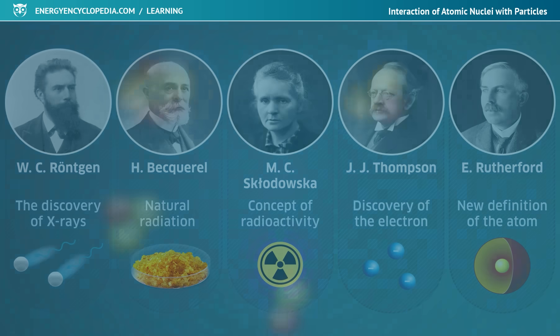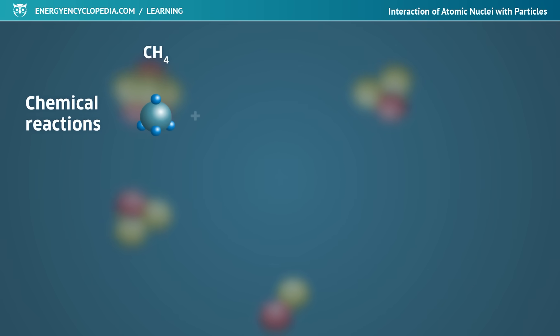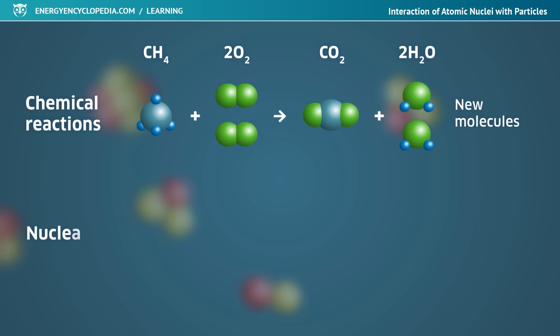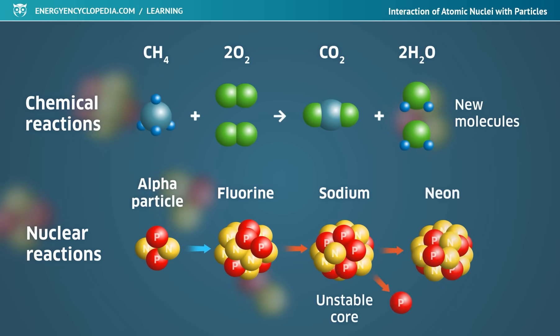While in chemical reactions, atoms interact with each other at the level of their electron shells and new molecules are created by the reactions, in nuclear reactions, the atomic nuclei themselves interact with particles and new nuclei and newly emitted particles are created.